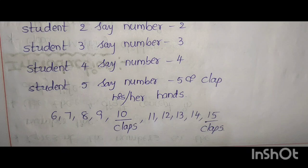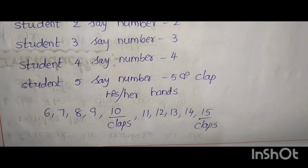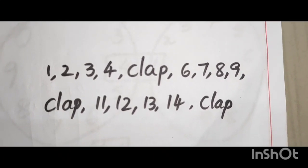11, 12, 13, 14, 15 claps. Which number have 0 or 5? They have to clap their hands. 1, 2, 3, 4 clap. 6, 7, 8, 9 clap. 11, 12, 13, 14, clap.